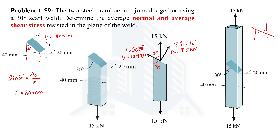So now we know this dimension is 80 millimeters. We know both dimensions of the rectangular weld area, so we can calculate the shaded area: 20 mm × 80 mm = 1600 mm², or equivalently 1.6 × 10⁻³ m².